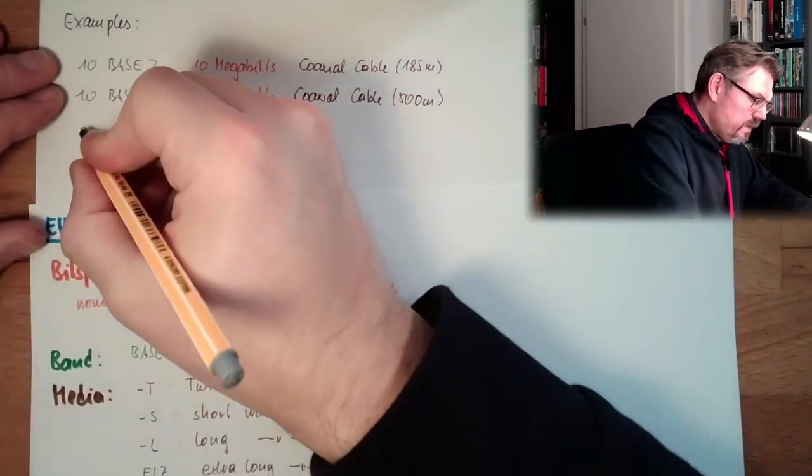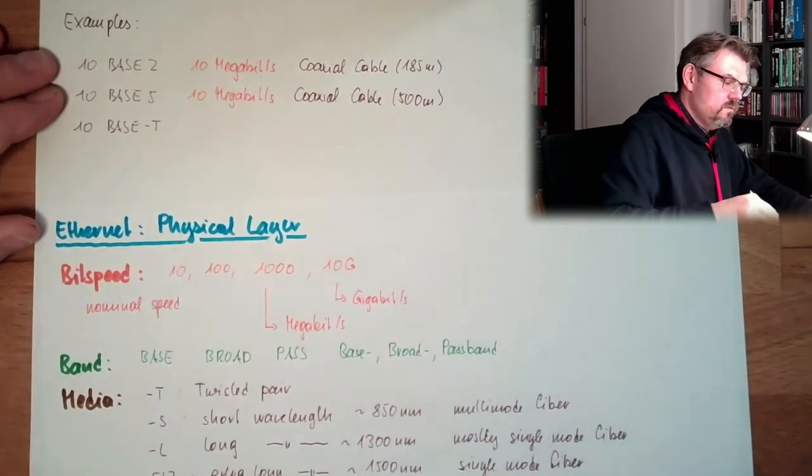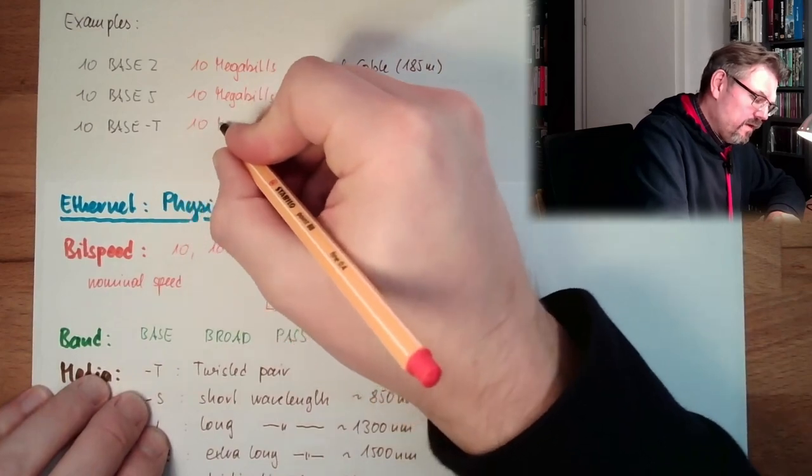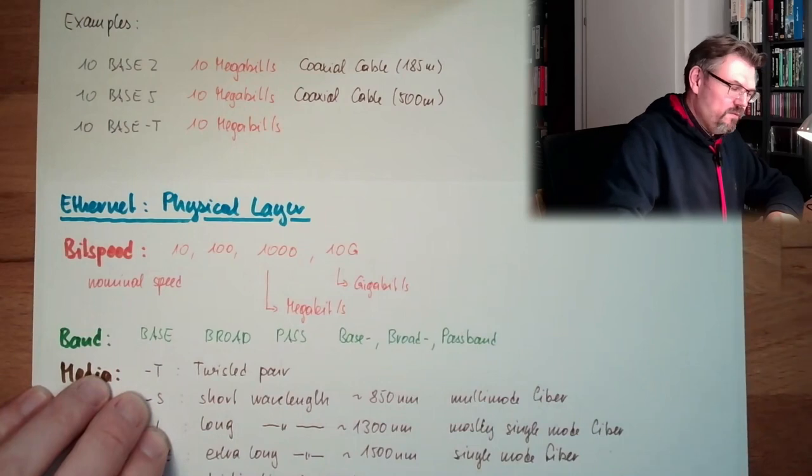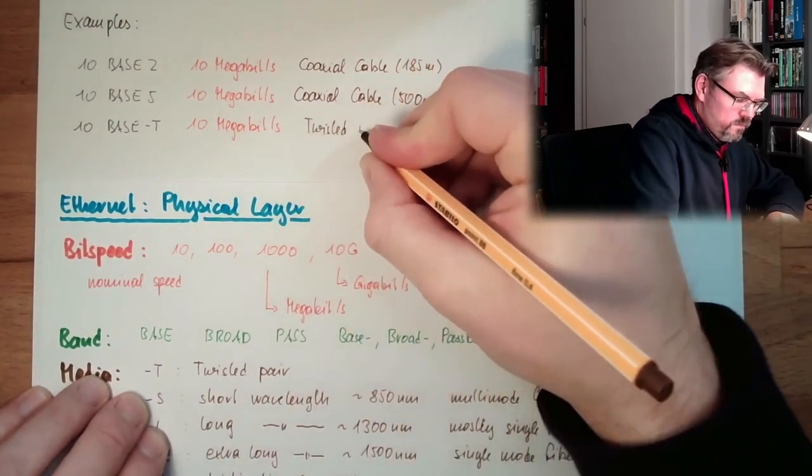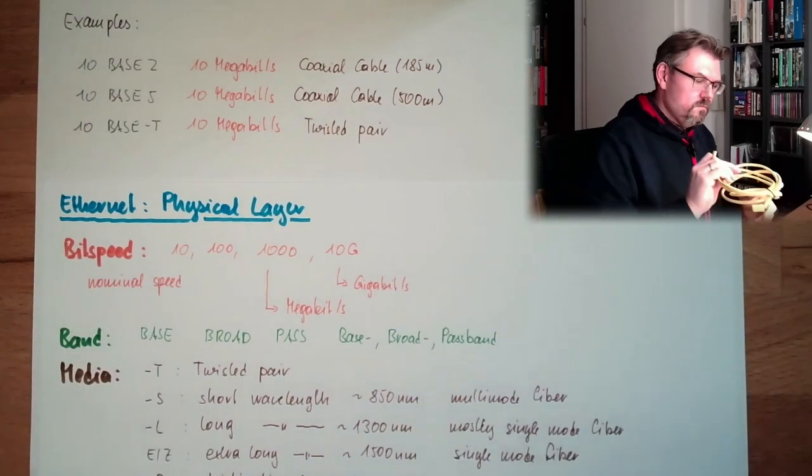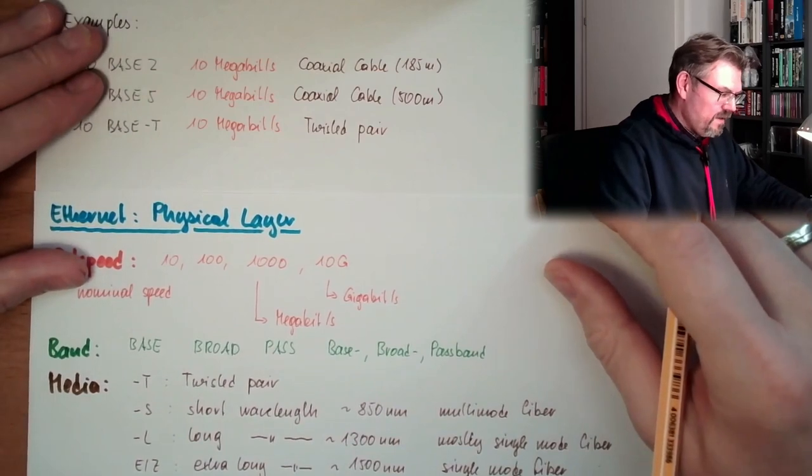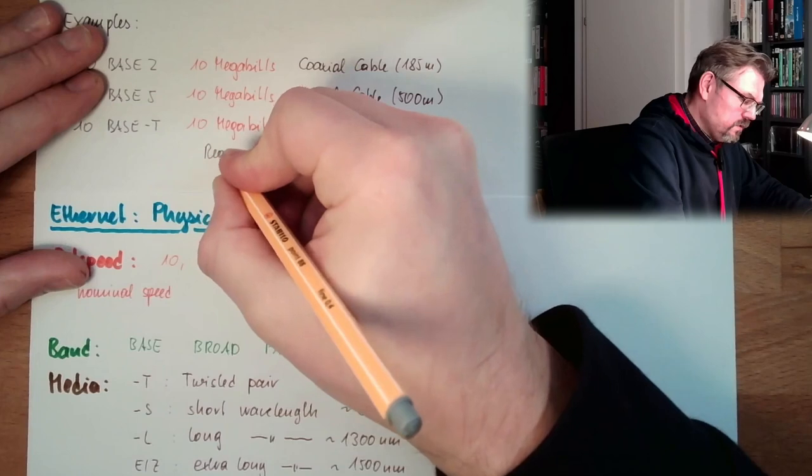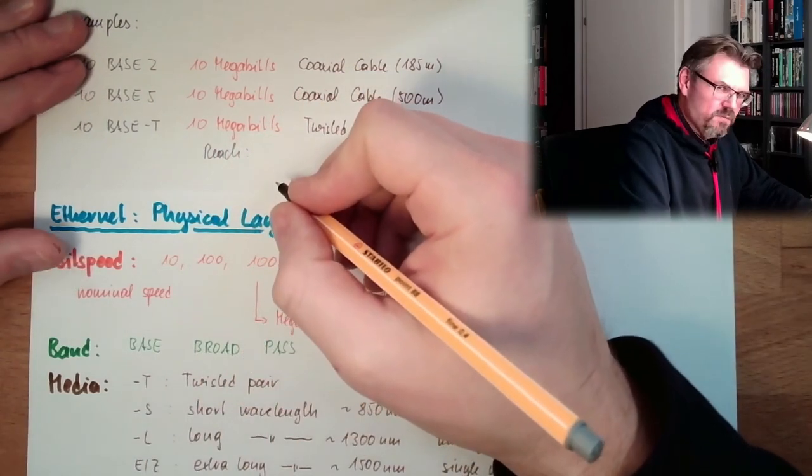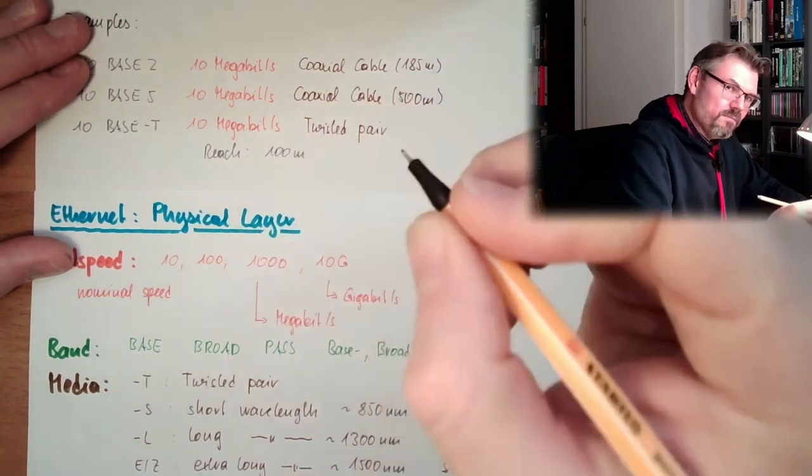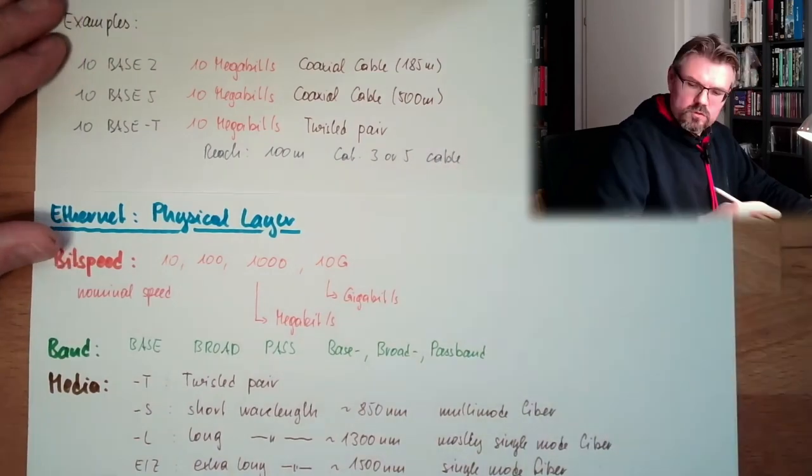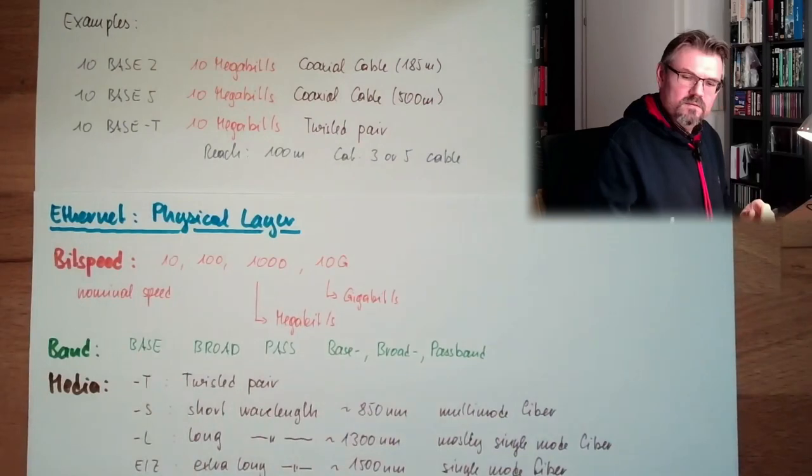And what would then be 10BaseT? Twisted pair. 10 megabit per second, and we have a twisted pair cable, such cables I've shown you. What is this 10BaseT? We had here around reach. The reach was, I say was because it's still defined but it's obsolete, 100 meters per segment. And we needed the category 3 or 5 cable. So this cable would be sufficient for 10BaseT.